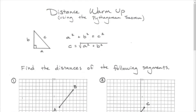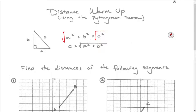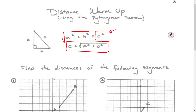Before teaching about dilations, I want to review two concepts: finding the distance of segments and finding slopes. You probably know the Pythagorean theorem, a squared plus b squared equals c squared. If you take the square root of both sides, you get c equals the square root of a squared plus b squared. That's the most direct way to find distance on the coordinate plane.